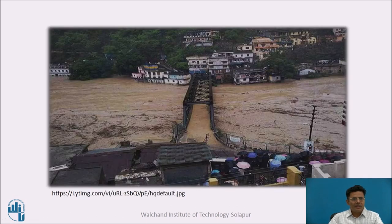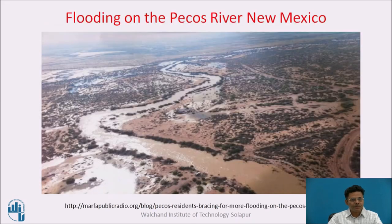Here we see a typical picture of a river carrying a big flood near a bridge. This gives you the idea of how rivers are flooded in rainy seasons. We always want information about the flood passing a particular section of the river at a particular time. This is another picture of flooding in the Pecos River of New Mexico, where water spreads extensively on both banks of the river — these are called flood plains.